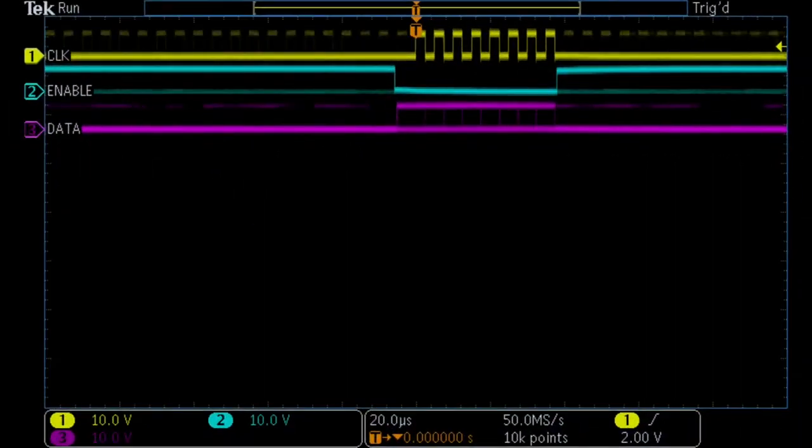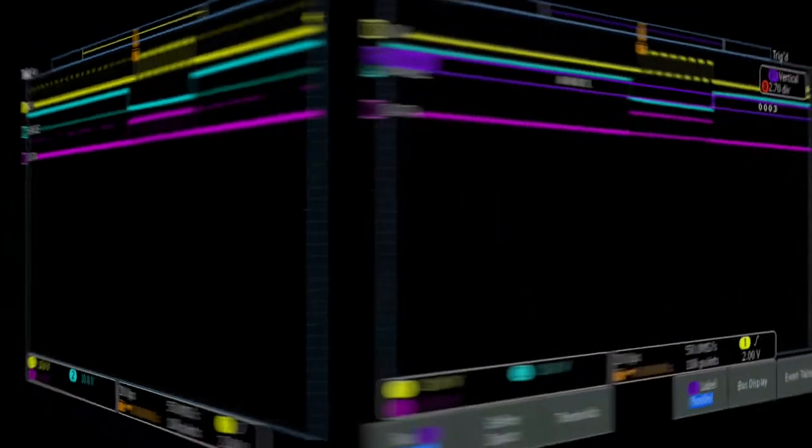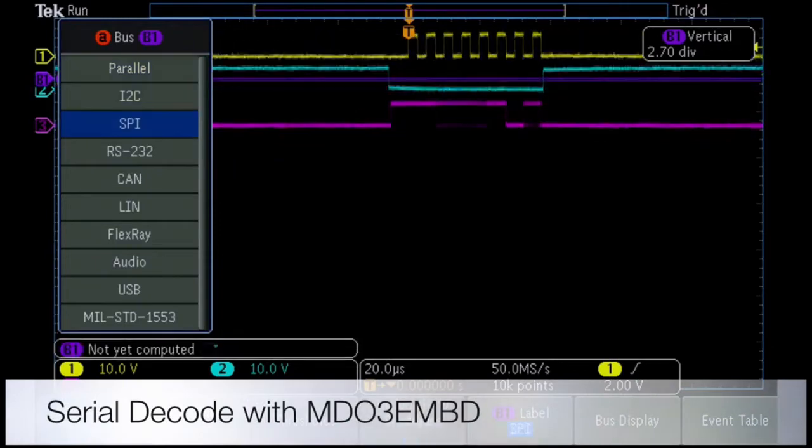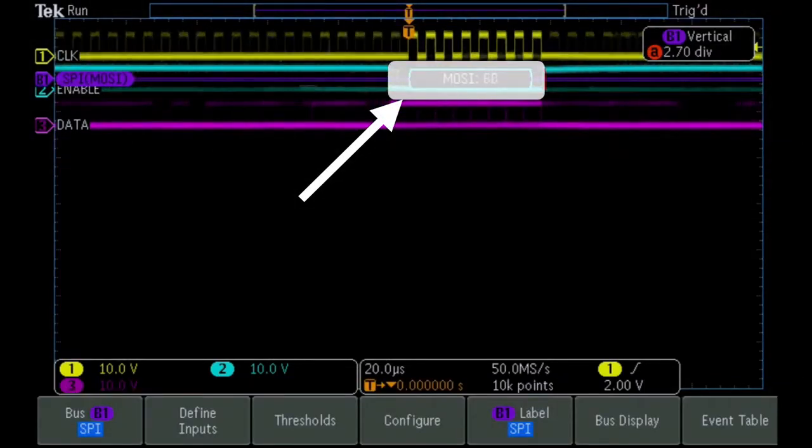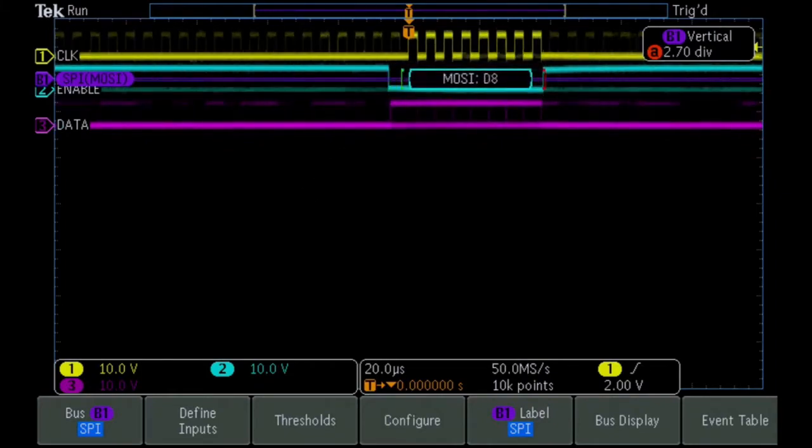We define a few bus parameters and the scope automatically decodes the serial bus data, saving you hours of time and costly mistakes by avoiding manual decode of the bus data.